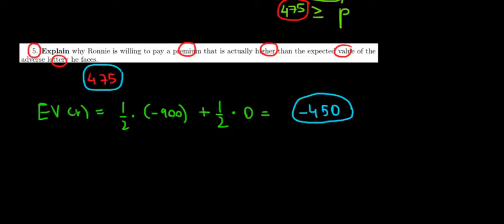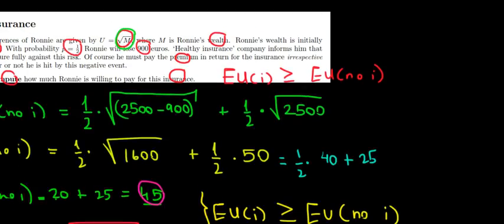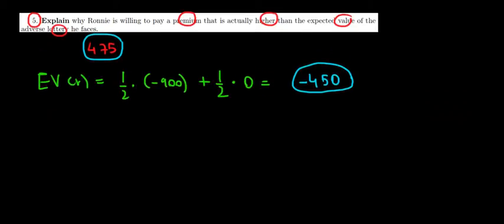To answer this, we have to look at the consumer's behavior. We have to look at our utility function, which is U = √M. If we plot this on a graph, we'll understand why this is the case.